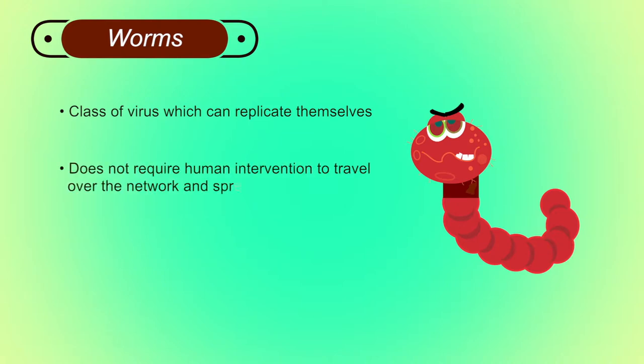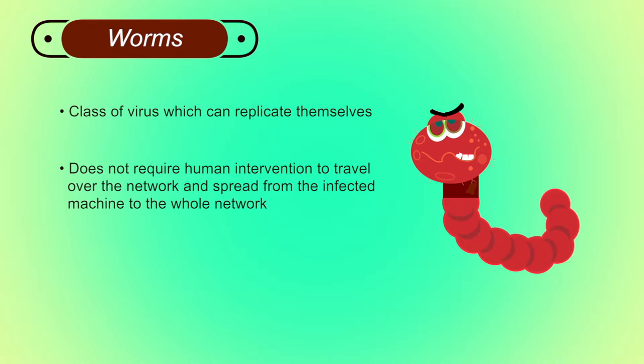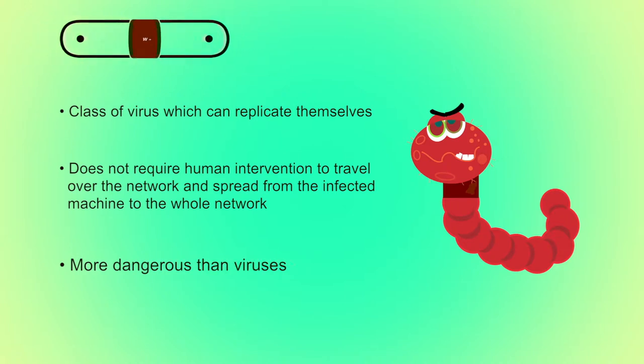Worms: they are a class of virus which can replicate themselves. They differ from viruses in that they do not require human intervention to travel over the network and spread from one infected machine to the whole network. These are more dangerous than viruses.